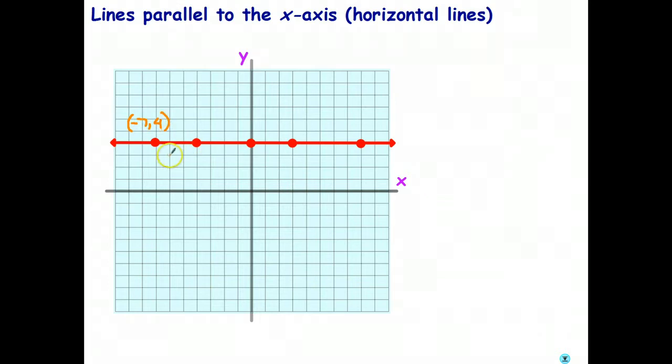That point has an x-coordinate of negative 4 and a y-coordinate of 4. Let's do one more. This point here has an x-coordinate of 8 and a y-coordinate of 4.